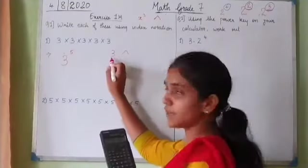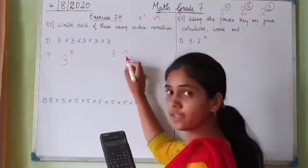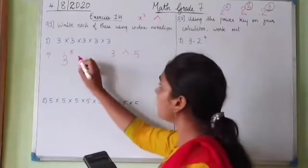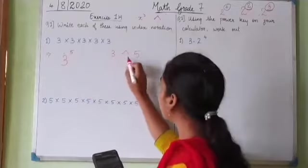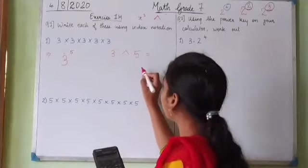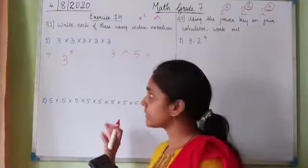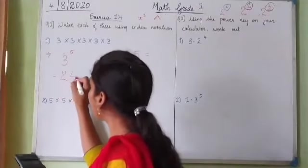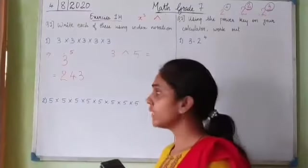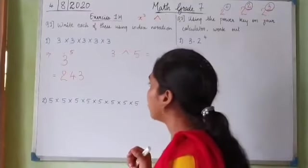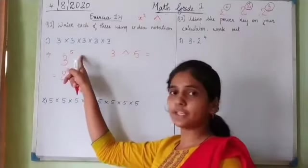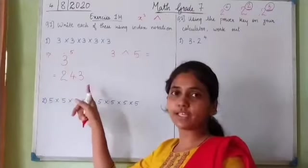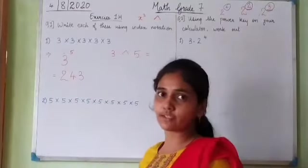The keys pressed were: 3, raised-to sign, 5, equals — giving 243. We can leave the answer as 3 raised to 5, or if the question asks for the value, we can find it using the calculator.